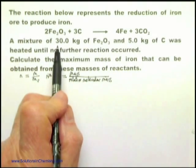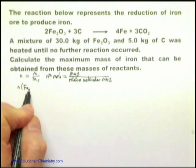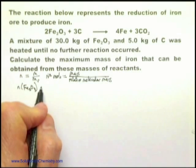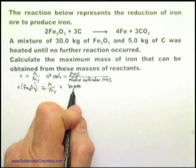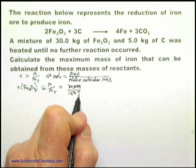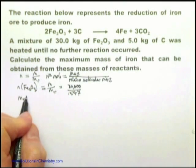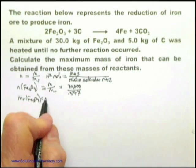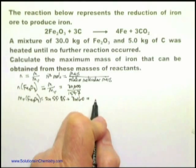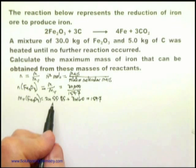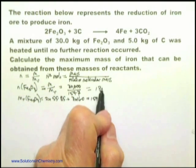We're going to use this data and determine the number of moles of Fe2O3 present in this quantity. The number of moles of Fe2O3 equals mass over MR, which equals 30,000 over 159.7. I got 159.7 from the MR of Fe2O3: equals 2 times 55.85 plus 3 times 16, which equals 159.7. Those numbers come from the periodic table in your data booklet. This comes to 188 moles.